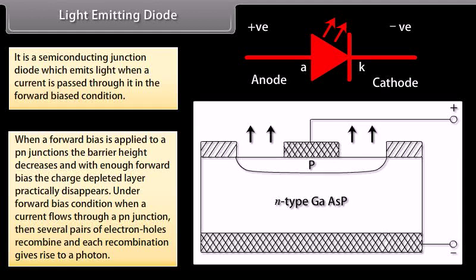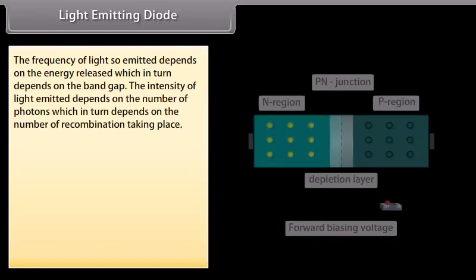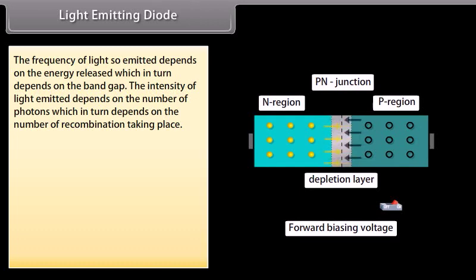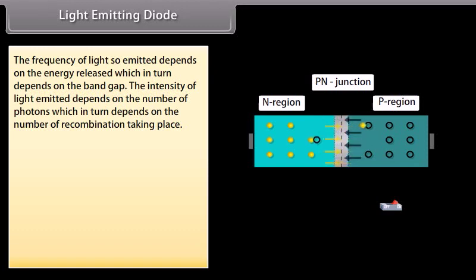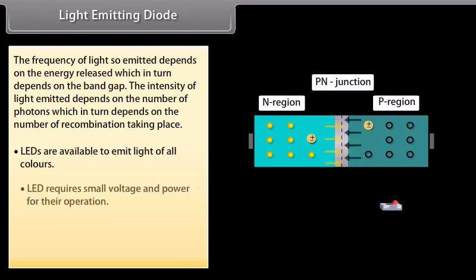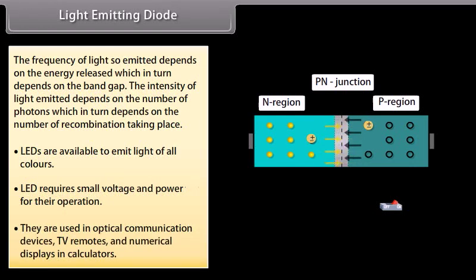Under forward bias condition, when a current flows through a P-N junction, several pairs of electron-holes recombine and each recombination gives rise to a photon. The frequency of light emitted depends on the energy released, which in turn depends on the band gap. The intensity of light emitted depends on the number of photons, which depends on the number of recombinations. LEDs are available to emit light of all colors, require small voltage and power, and are used in optical communication devices, TV remotes, and numerical displays in calculators.